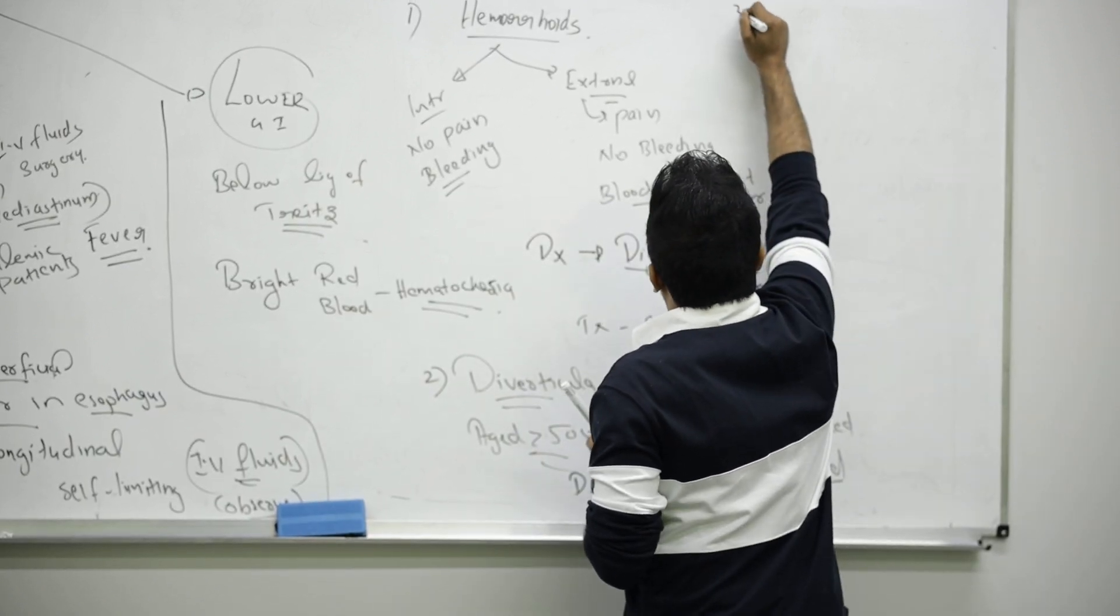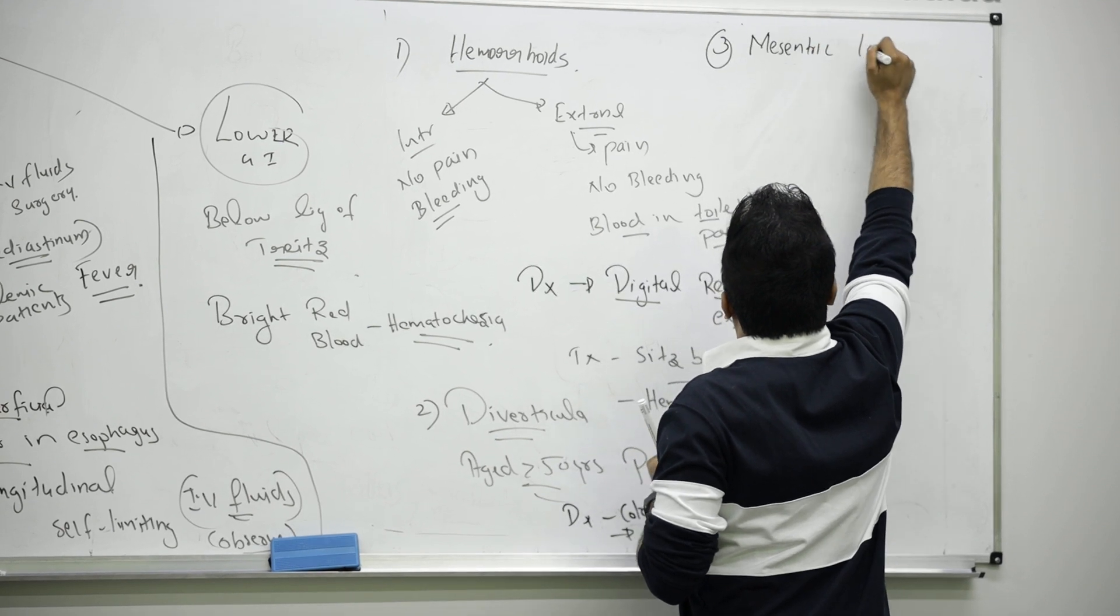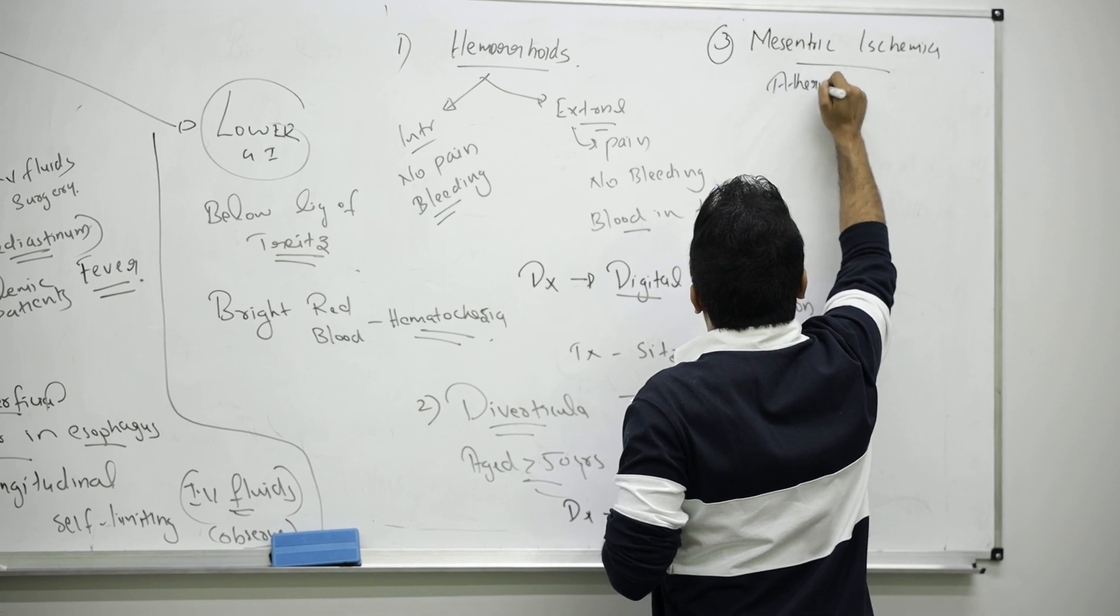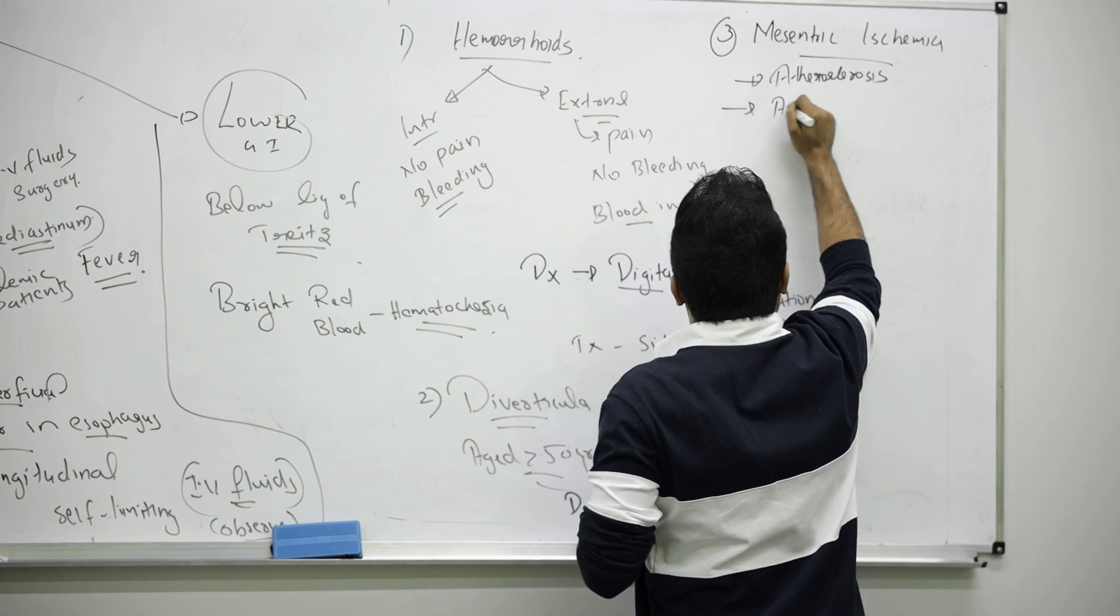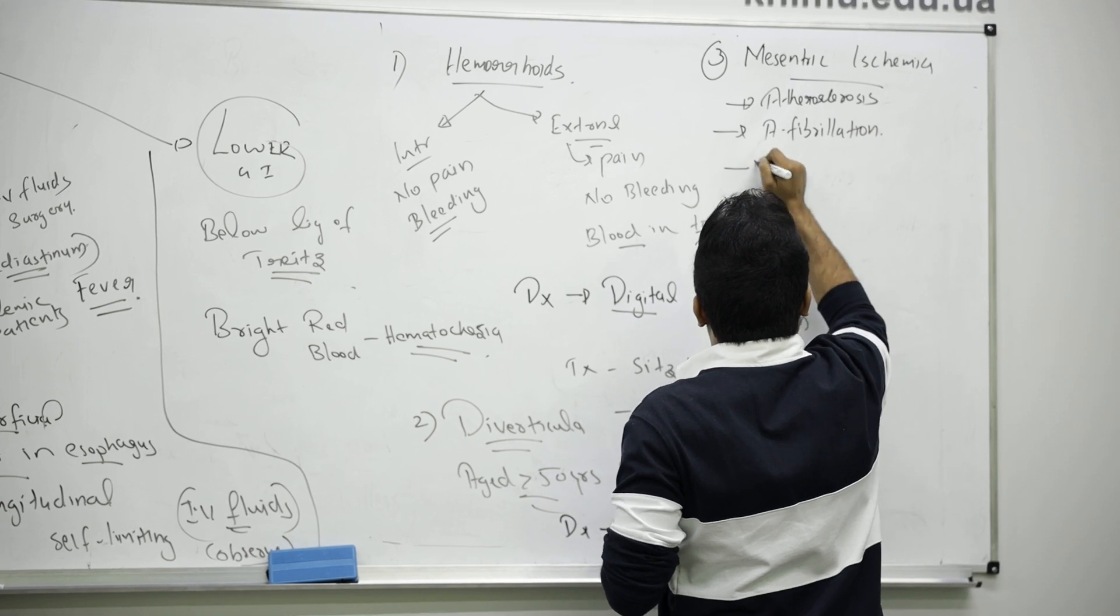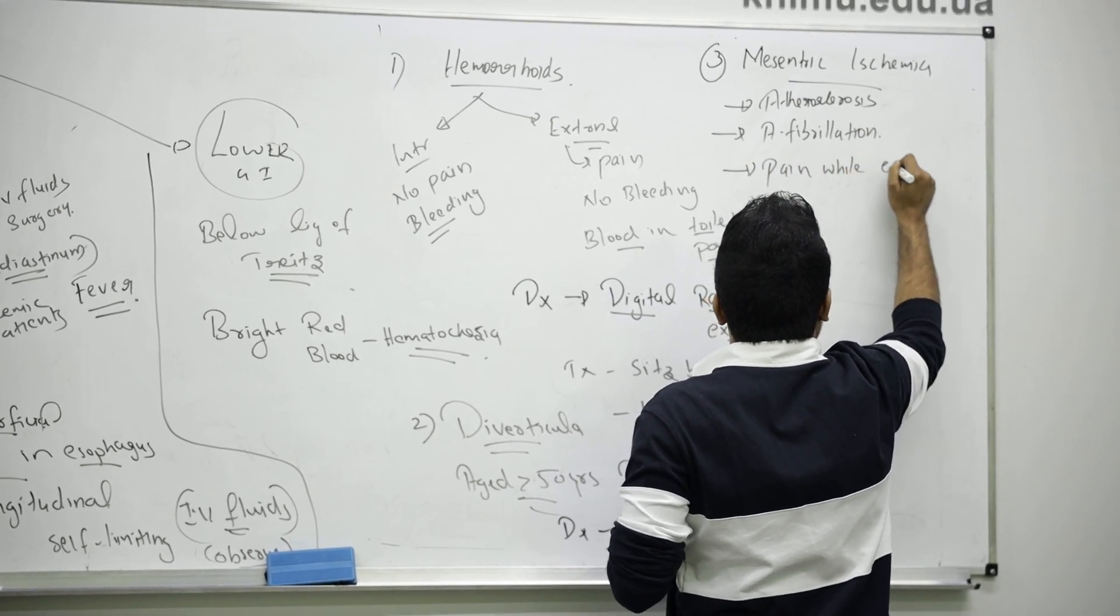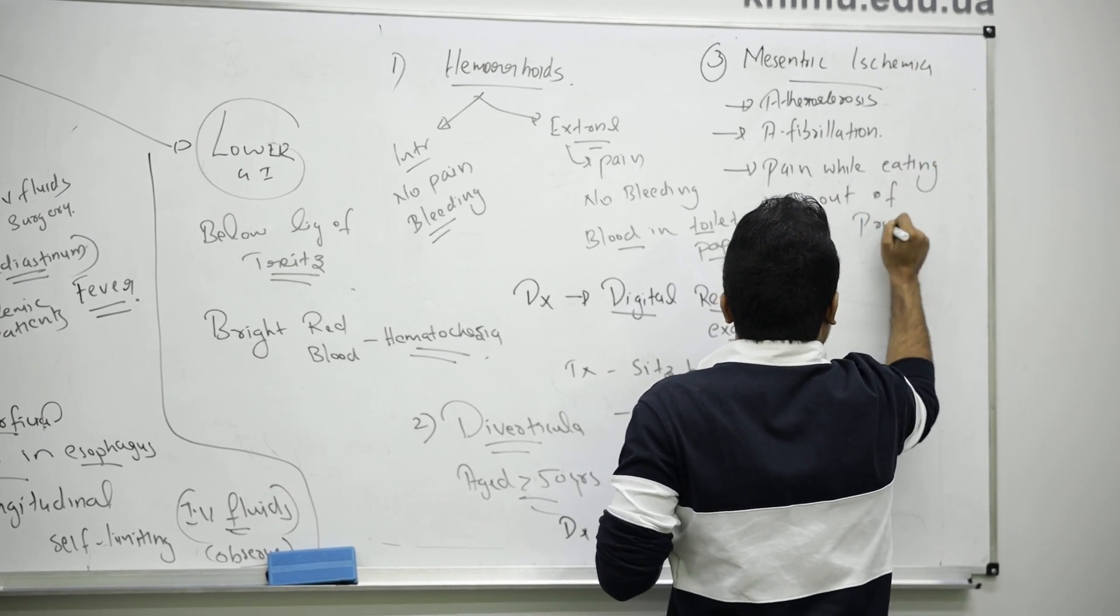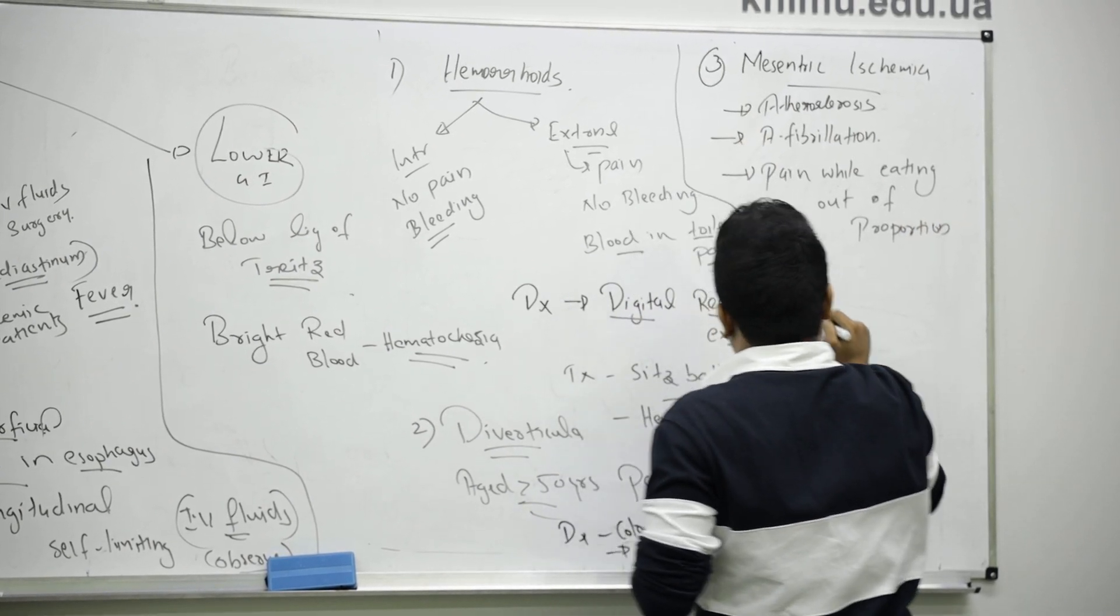Next one, there is something called mesenteric ischemia. It is related with atherosclerosis. Patient will have atrial fibrillation, pain while eating. That pain will be so much out of proportion.